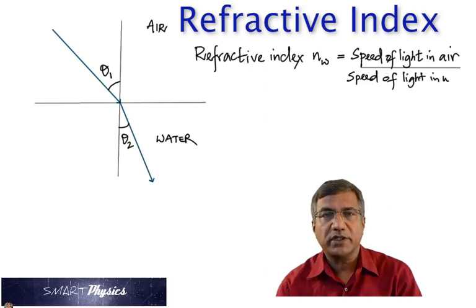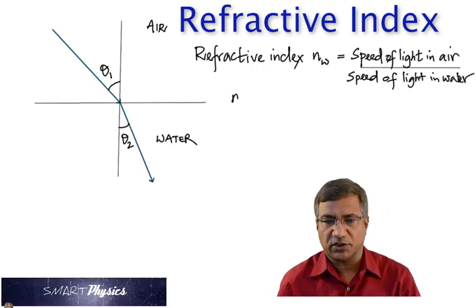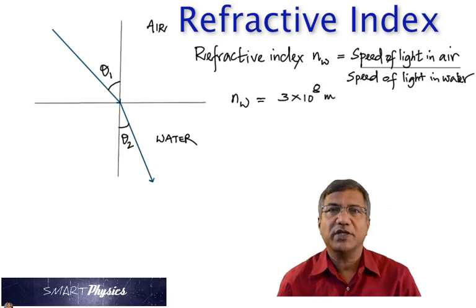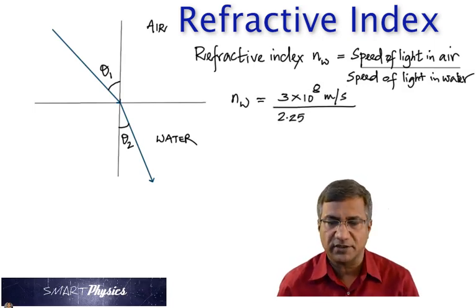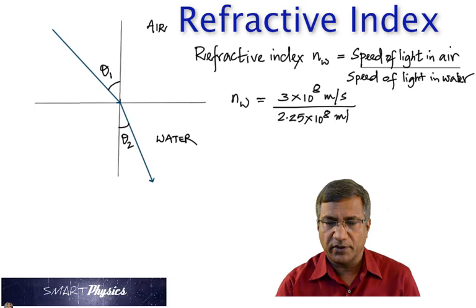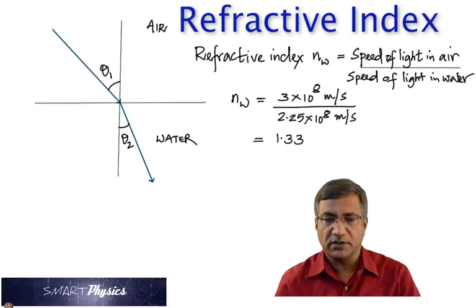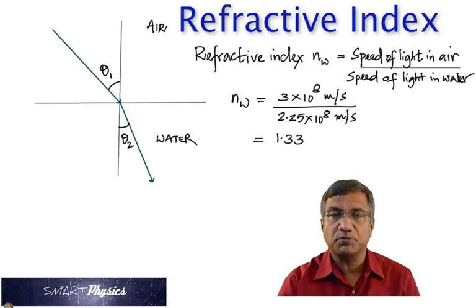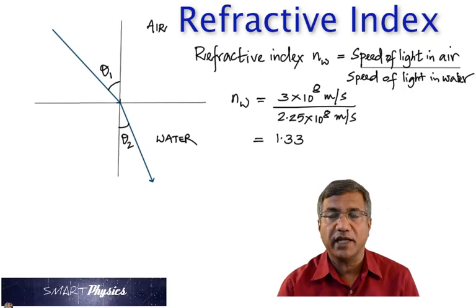So, knowing that the speed of light in air is 3 times 10 to the 8 meters per second, we can calculate the refractive index of water. The speed of light in water is 2.25 times 10 to the 8, so the ratio gives us 1.33.